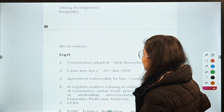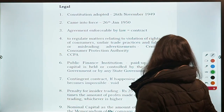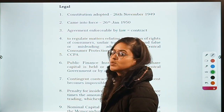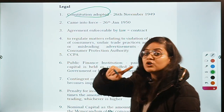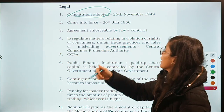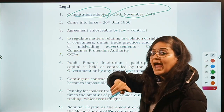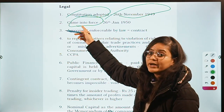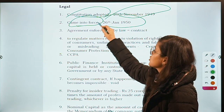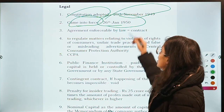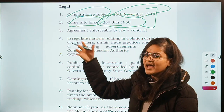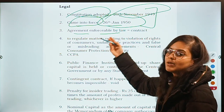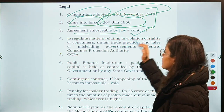Now moving on to the Legal part of the paper. Let us discuss the legal questions and their answers. The first question was: when was the Constitution adopted? Answer: 26 November 1949. Then there was one more question — when did the Constitution come into force? It came into force on 26 January 1950. Then: agreement enforceable by law is what? Contract — a simple question.